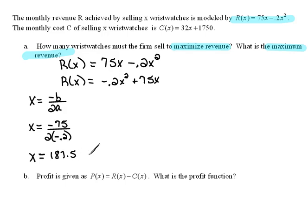Now, here's the interesting thing about doing application problems. They have to make sense. We really can't sell 187.5 wristwatches. That doesn't make any sense. So we're actually going to round this up to 188 watches.